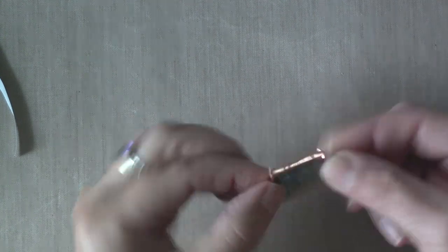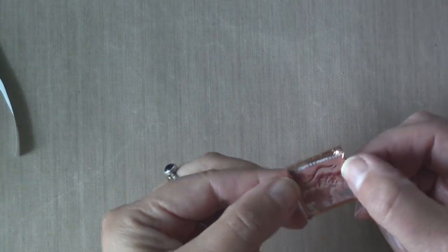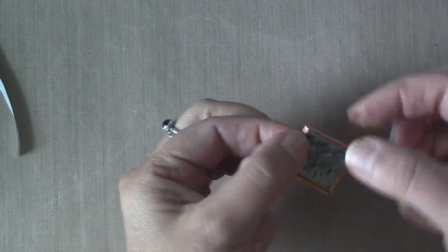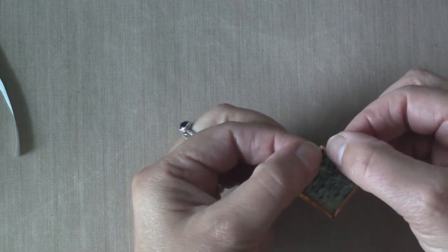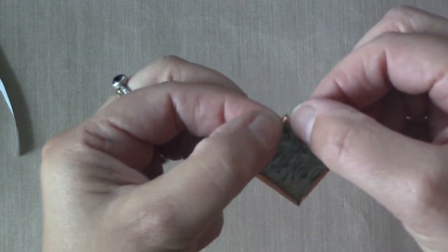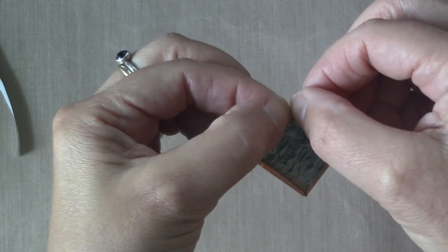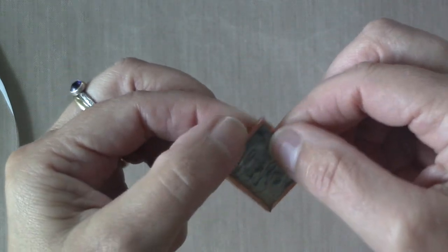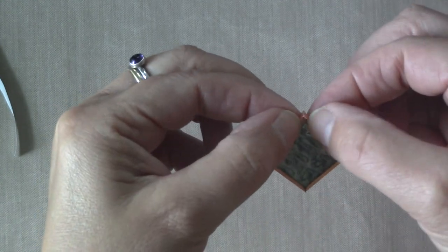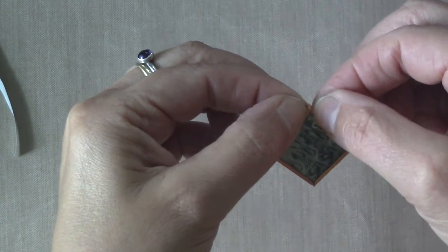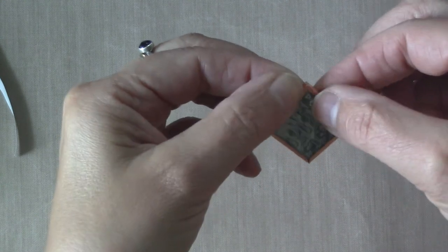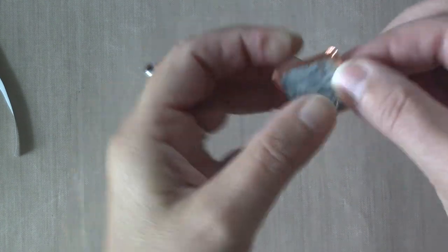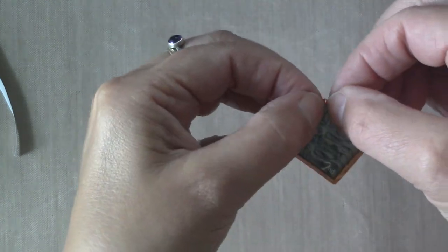When you do that, you're pushing down on the back and the front. Now to do the corners, you're going to take your fingernails and just push together. You want to miter the corner. It's like wrapping a present, but you want the corners to be mitered. So you're just going to get to the corner and squeeze your fingernail. This is the easiest way I have found to do this.